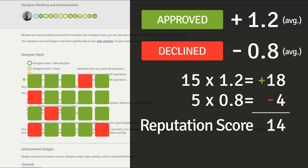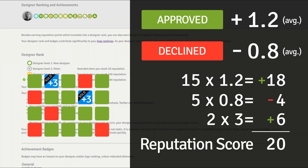Now let's suppose that you also sell two of your 15 approved logos. Every sale gives you plus 3. So if we add that to our sum, our reputation score has now hit 20.